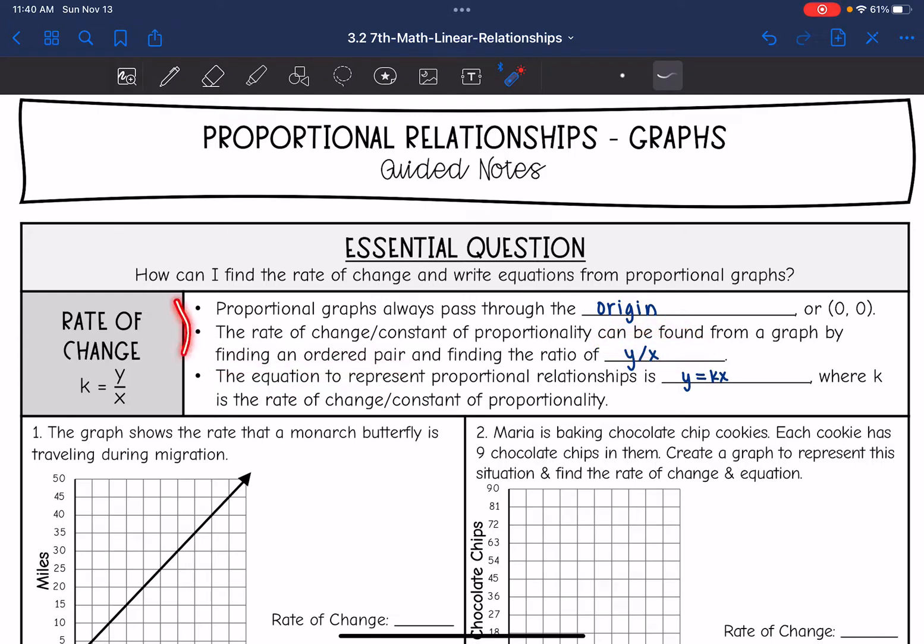So to find the rate of change or the constant of proportionality from a proportional graph, you will just do y divided by x. Then you can use that k value to write the equation in y equals kx form, where k is that rate of change or constant of proportionality.